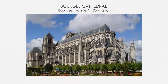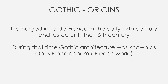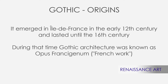It emerged in Ile-de-France, the northern region that includes Paris, in the early 12th century and lasted until the 16th century. During that time, Gothic architecture was known as Opus Francigenum — French work. It started to be called Gothic just during the Renaissance, with the meaning of barbaric.